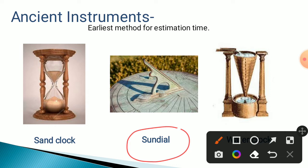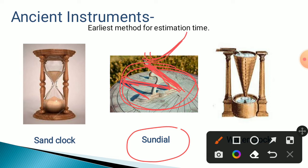The sundial is an instrument which indicates time by studying the position and shadow cast by the sun. Based on the position of the shadow, the time is estimated. Since it relies on the sun's position, it gives only an approximate time — it is not accurate. This is why it is classified as an ancient instrument.